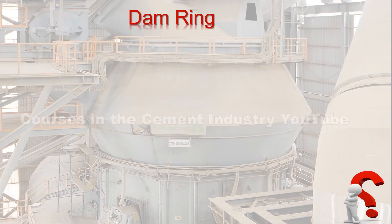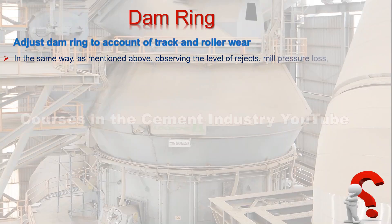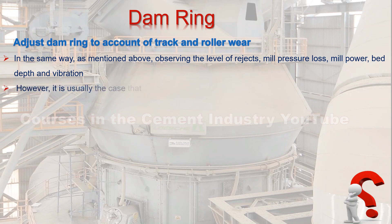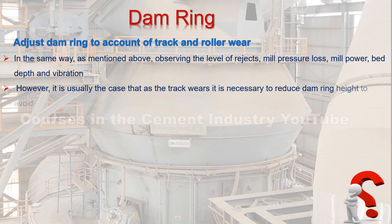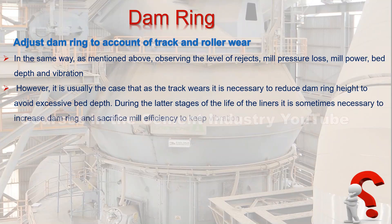In the same way as mentioned above, observe the level of rejects, mill pressure loss, mill power, bed depth, and vibration. However, it is usually the case that as the track wears, it is necessary to reduce dam ring height to avoid excessive bed depth. During the latter stages of the life of the liners, it is sometimes necessary to increase the dam ring and sacrifice mill efficiency to keep vibration under control.